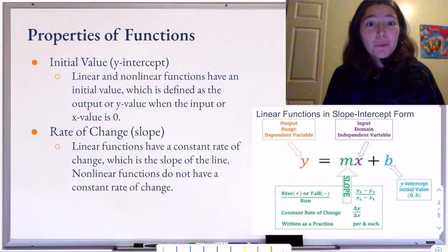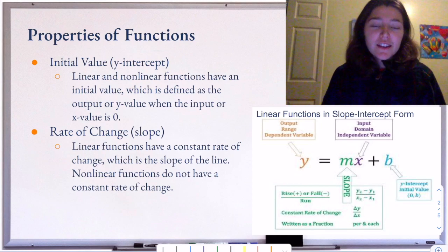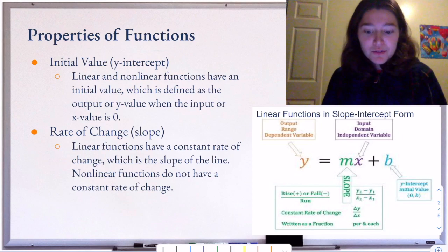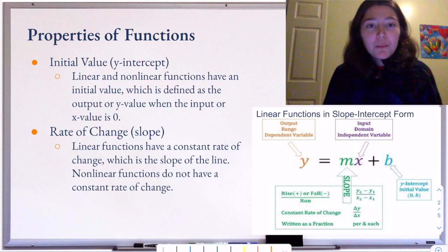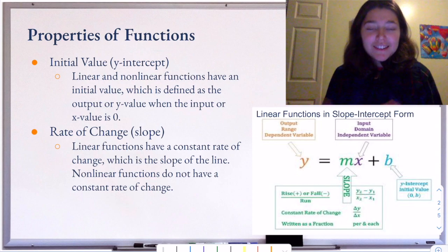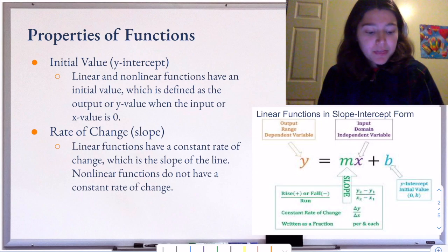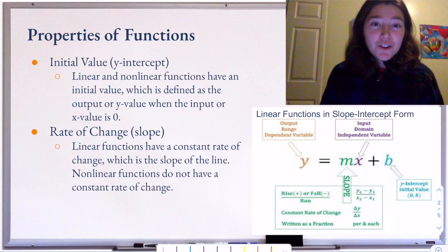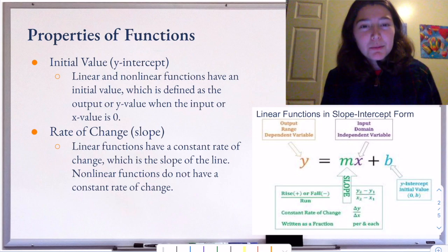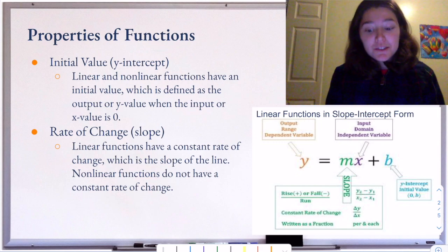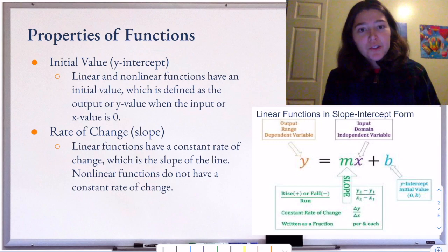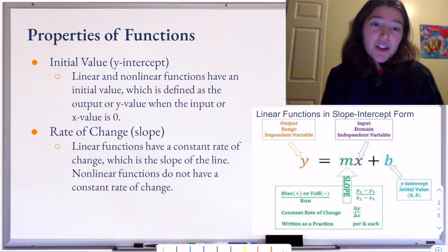We're going to look at comparing two different functions and pulling up the key information from each. When we think about functions, there are two key properties. The first is the initial value. All functions, linear and nonlinear, have an initial value, and that is often referred to as the y-intercept. It's the output or the y-value when the input or the x-value is zero.